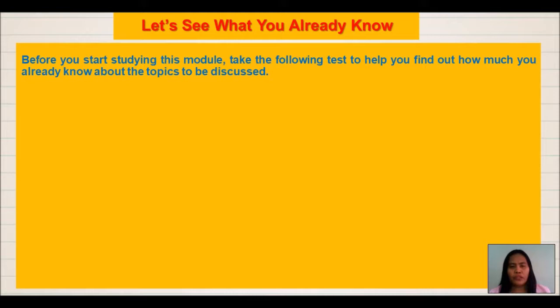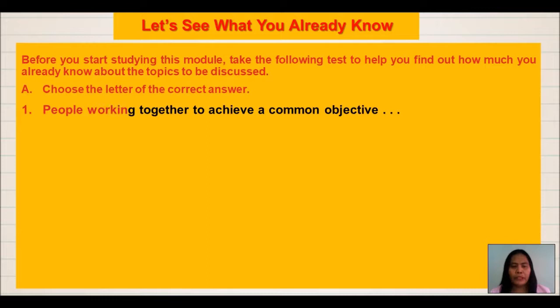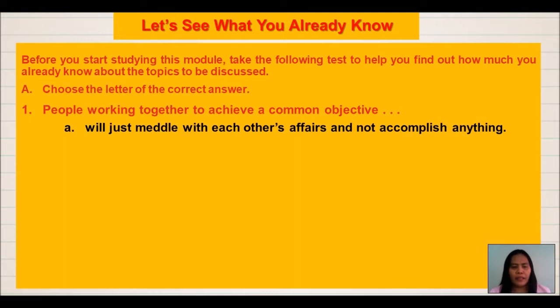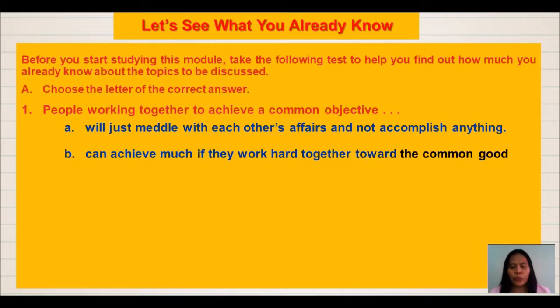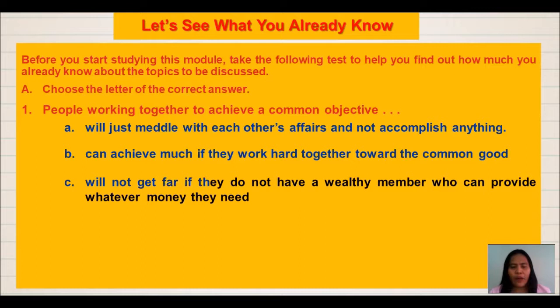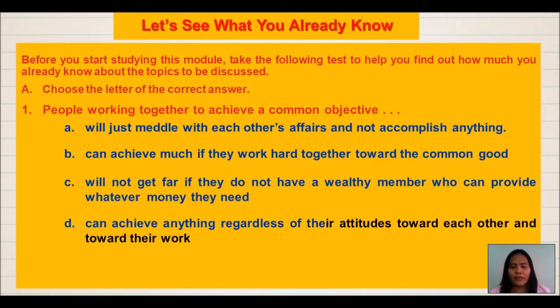Let's see what you already know. Before you start studying this module, take the following test. Choose the letter of the correct answer. Number 1: People working together to achieve a common objective — A. Will just meddle with each other's affairs and not accomplish anything. B. Can achieve much if they work hard together toward the common good. C. Will not get far if they do not have a wealthy member who can provide money.